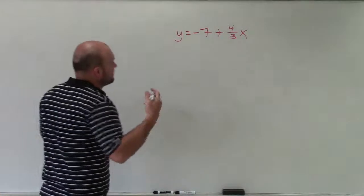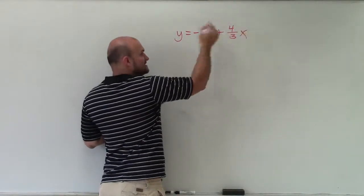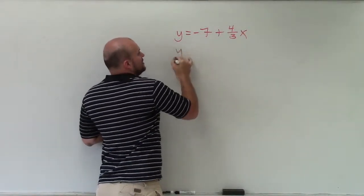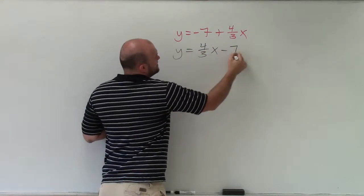So I'm just going to have to rewrite these. But when I rewrite them, please note that the 4 thirds x is positive and the 7 is negative. So I need to rewrite this as 4 thirds x minus 7.